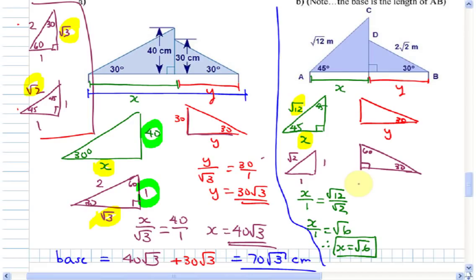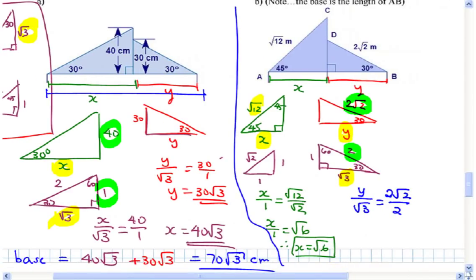By the way, you were supposed to memorize these triangles, so I hope you're at least familiar with them now. Compare Y with root 3 — the other side is root 2, which compares with the 2. So: Y over root 3 equals 2 root 2 over 2. The 2's cancel, and multiplying root 3 across gives Y equals root 2 times 3, which is root 6.